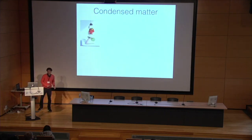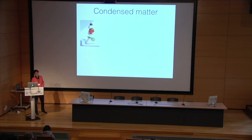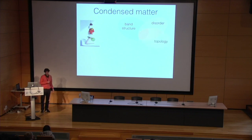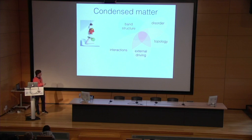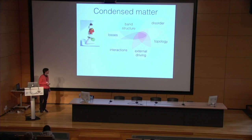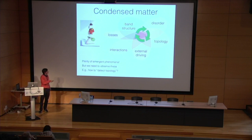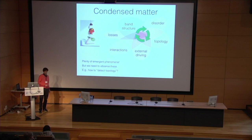Here is my personal point of view about modern condensed matter — maybe influenced by the food these days. It's a very juicy and tasty structure with lots of different layers that we can stack: from band structure and disorder, we can add topology, we can add external driving, we can have interactions, we can even have losses. In this talk, I will be mainly focusing on band structure, disorder, topology, and external driving. And as you can imagine, there is plenty of emergent phenomena when you mix all these features.